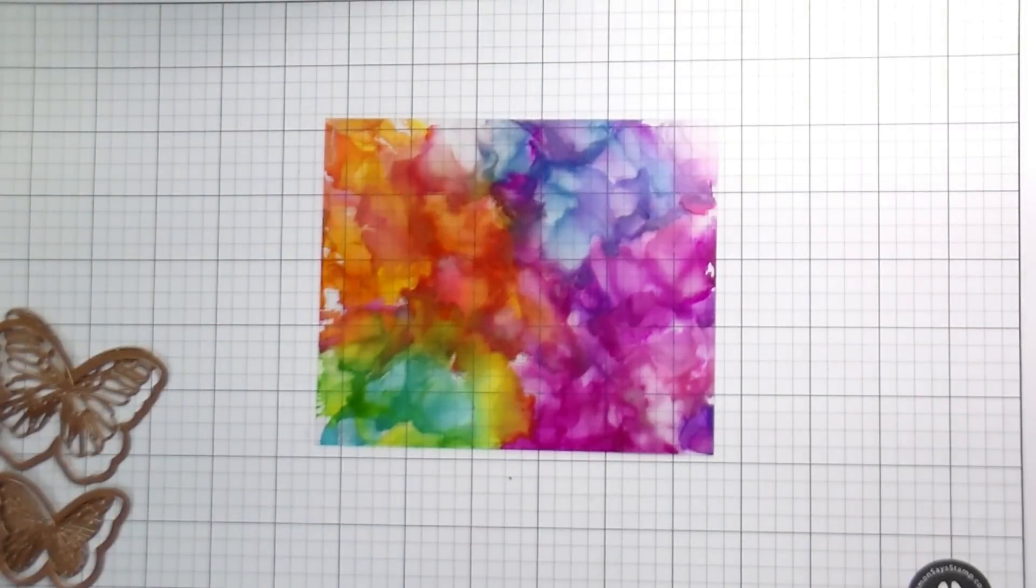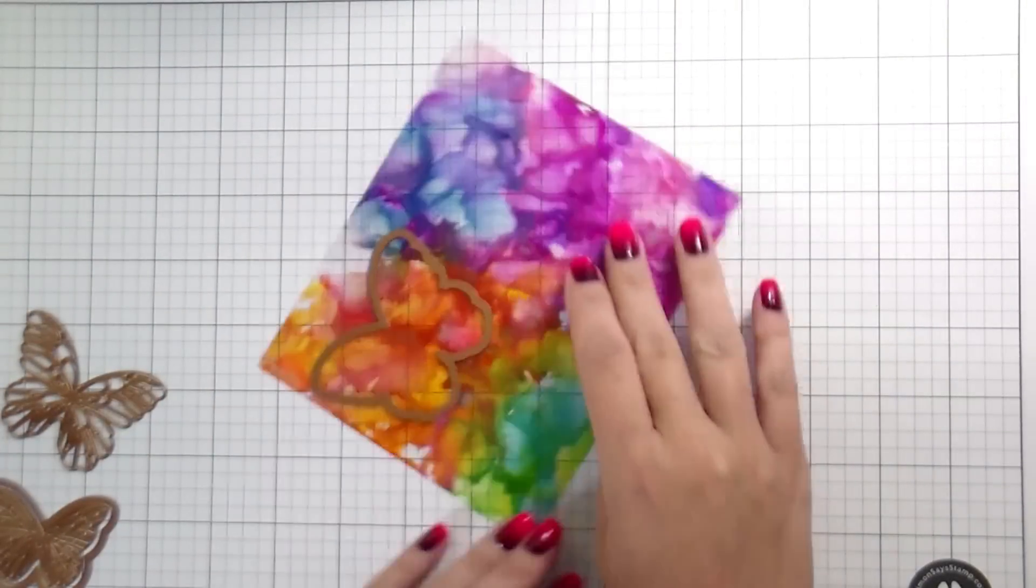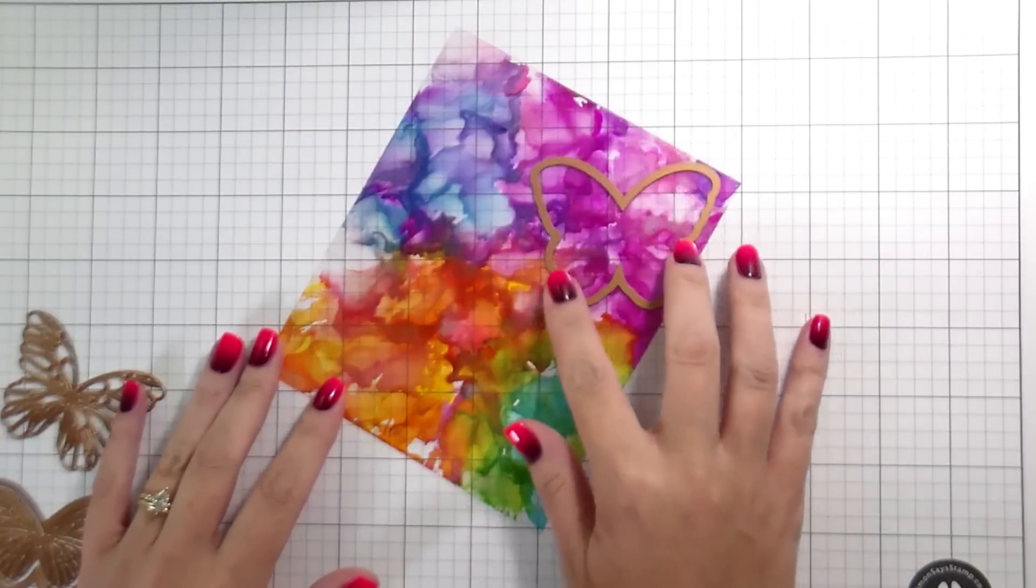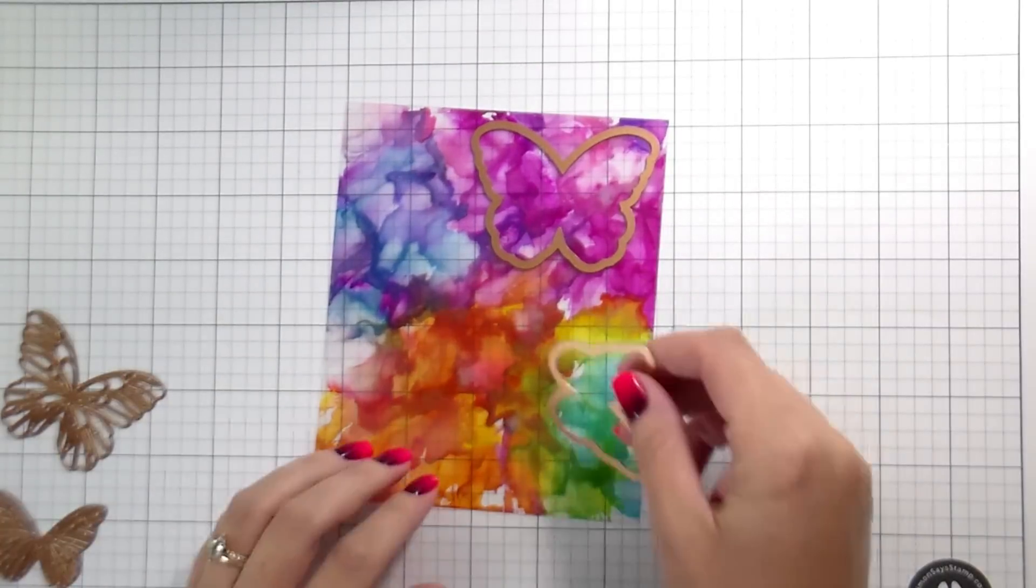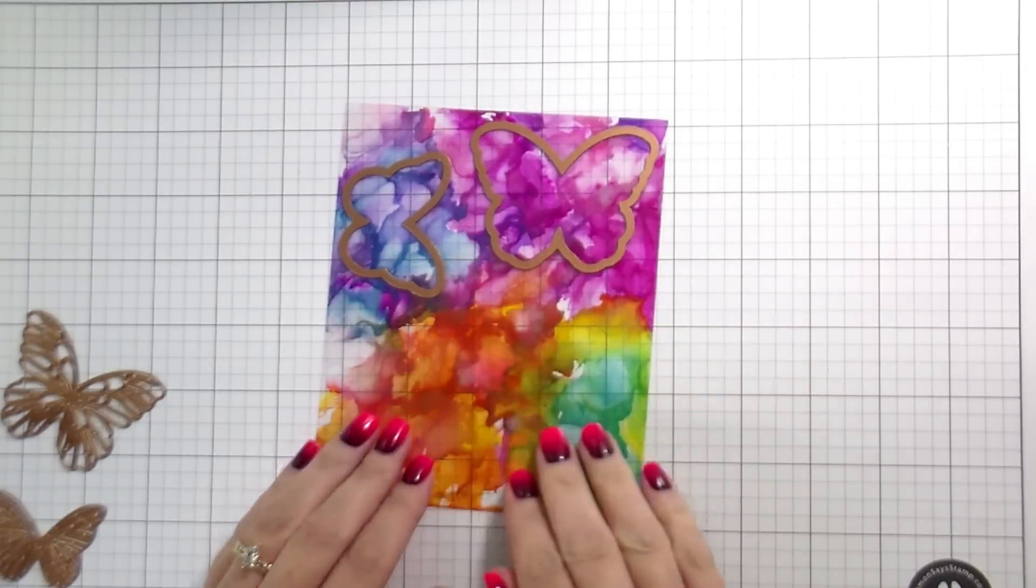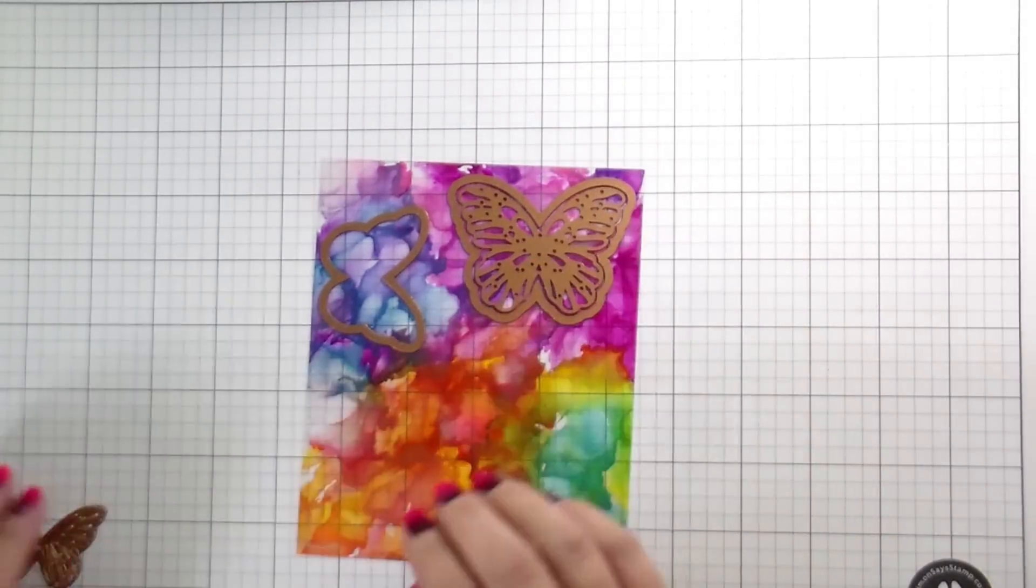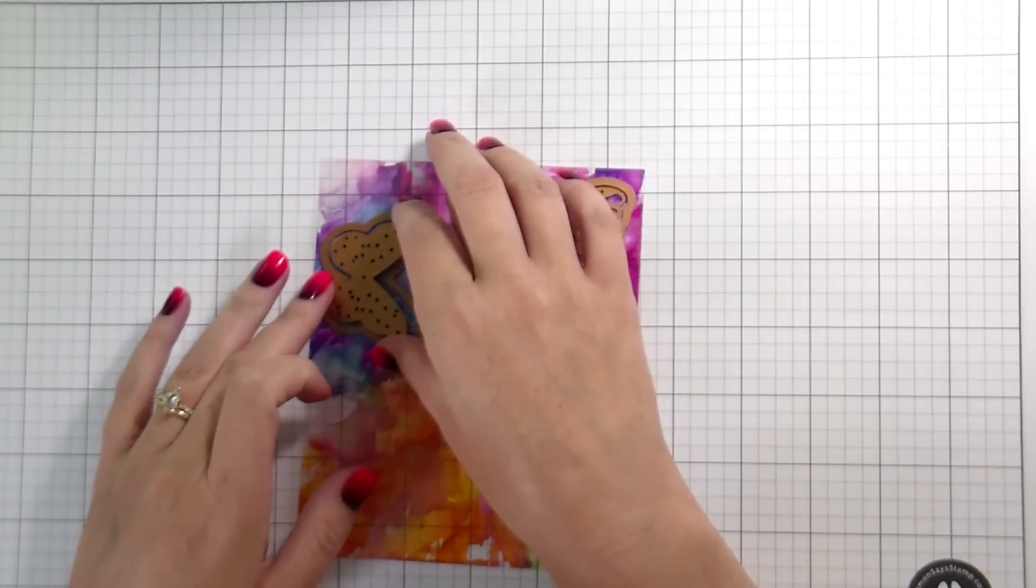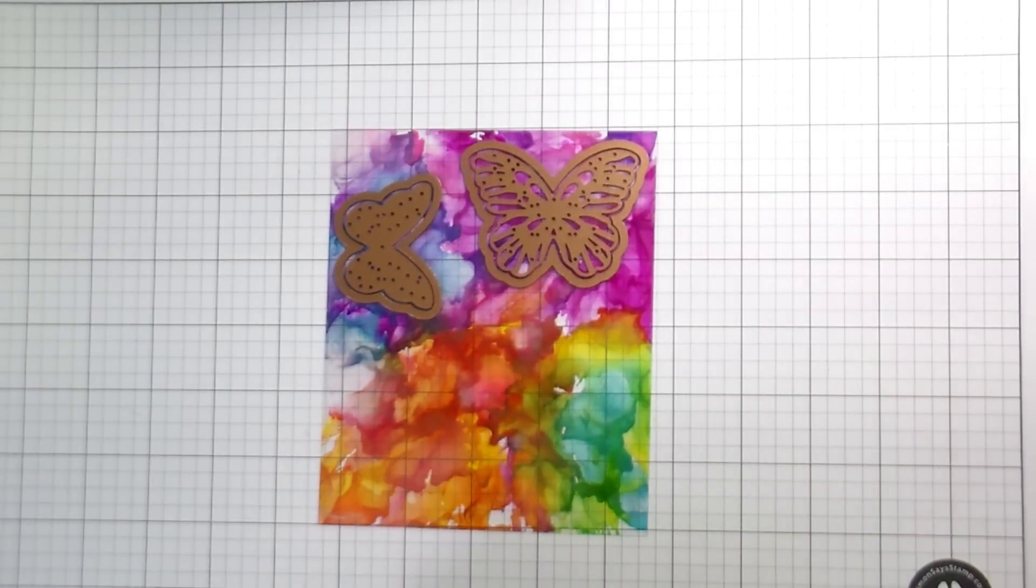So getting into the die cutting, I did flip my acetate over. So this is the reverse side of it for the die cutting. Because it does have a different look. I learned very quickly in doing this first one. So I have a Spellbinders Platinum six, that's my die cutting machine that my go to.